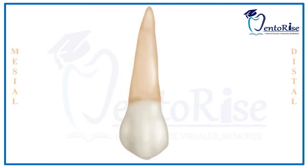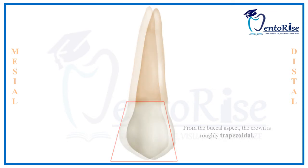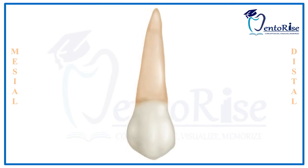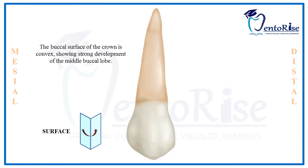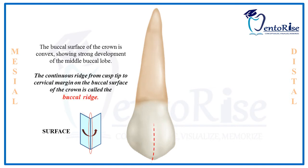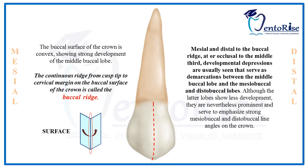The second heading under the buccal aspect is the overall shape of the crown. From the buccal aspect, the crown is roughly trapezoidal in shape. The third heading is the overall surface of the crown. The buccal surface is convex; however, it shows a strong development of the middle buccal lobe in the form of a continuous ridge — called the buccal ridge — that runs from the cusp tip to the cervical margin. Mesial and distal to this buccal ridge, on the occlusal third of the crown, a few developmental depressions can also be seen.